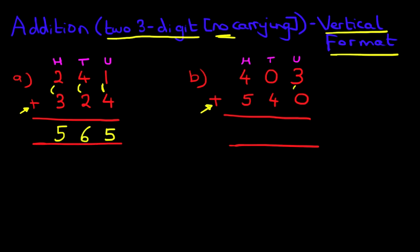And as always, we start with the column on the right-hand side first. 3 plus 0 is 3. 0 plus 4 is 4. 4 plus 5 is 9. The answer is 943.